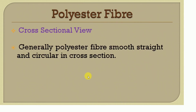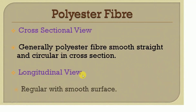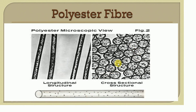Polyester fiber in cross-sectional view generally looks smooth, straight, and circular. In longitudinal view, it is straight and regular with a smooth surface, and there are no striations. This concludes the topic on microscopic identification of textile fibers. We will meet in the next class with a new topic. Thank you and goodbye, students.